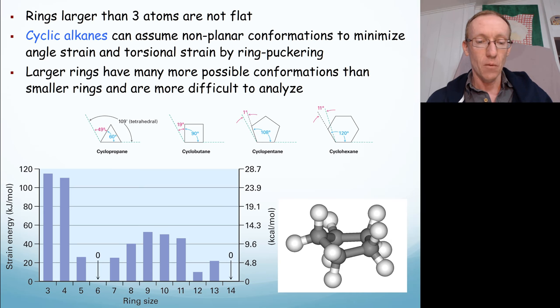We normally would need to approach those using computational chemistry because there's so many possible ways that you could get those atoms arranged in a ring once they get above about a size of seven or eight carbon atoms.